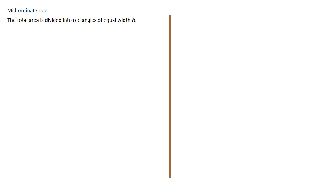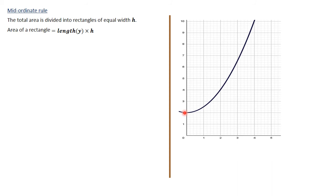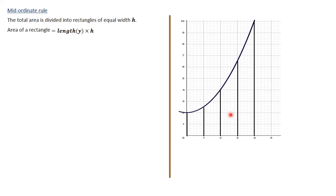The last part of this lesson is the mid-ordinate rule. The total area is divided into rectangles of equal width h. The area of a rectangle is length times width, where the width is h and the length is represented by the letter l, equivalent to the height in the trapezoidal rule. We want to find the area under a curve bounded by the y-axis, x-axis, and the line x = 4.